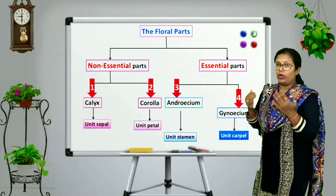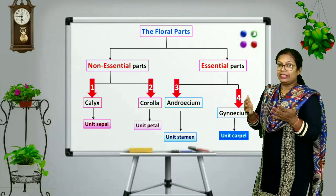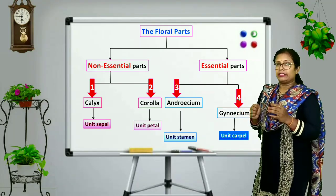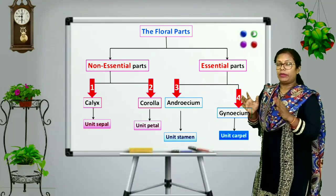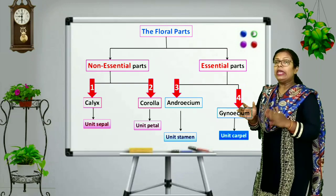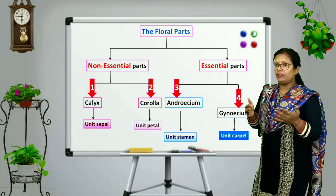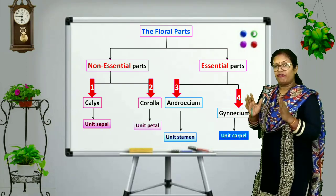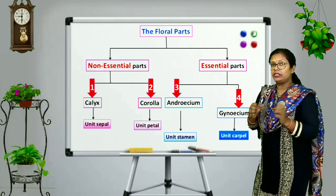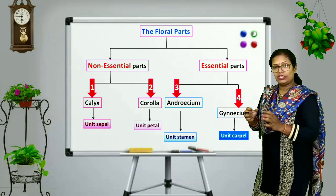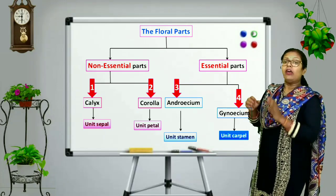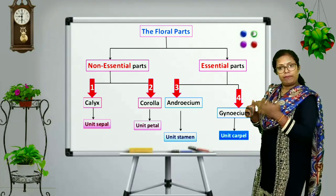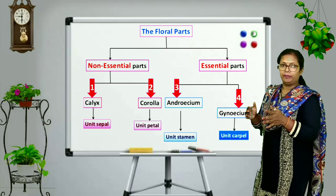Sepals and petals are non-reproductive organs, also known as accessory organs. Their function is to attract animals or insects towards the flowers for the purpose of pollination.